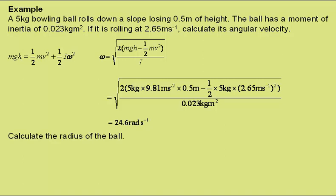Now calculate the radius of the ball. For this, we can use omega is equal to v over r, so the radius r is equal to the linear speed v over the angular velocity omega. Putting in the values gives a radius of 0.108 metres, or 10.8 centimetres.